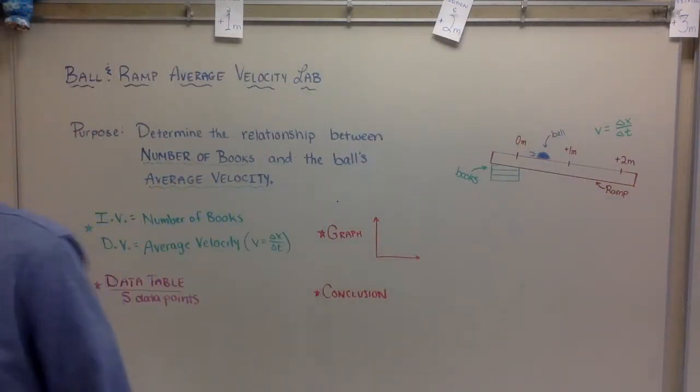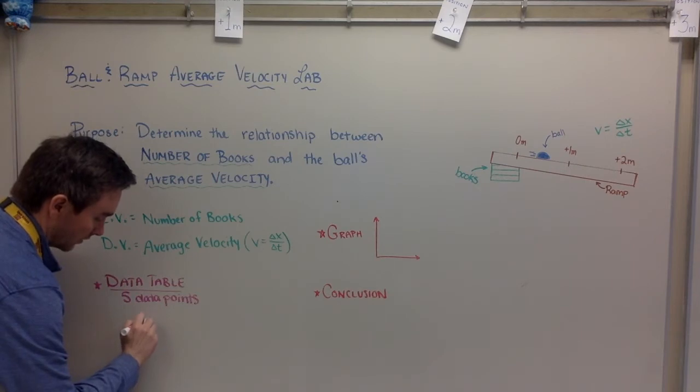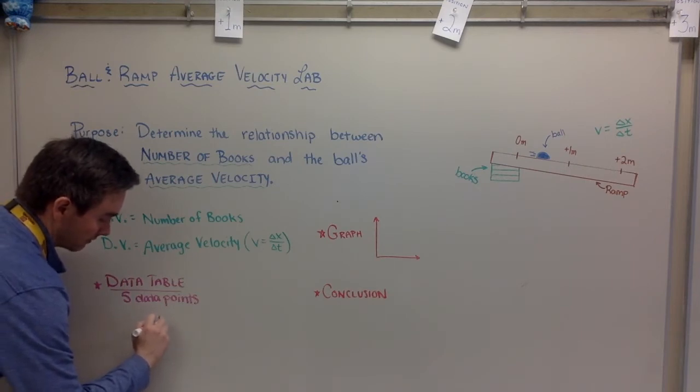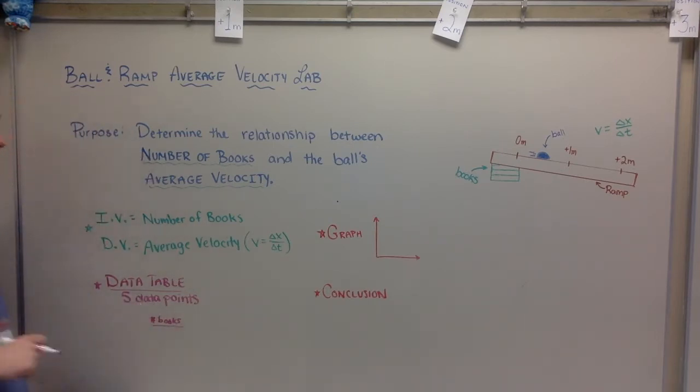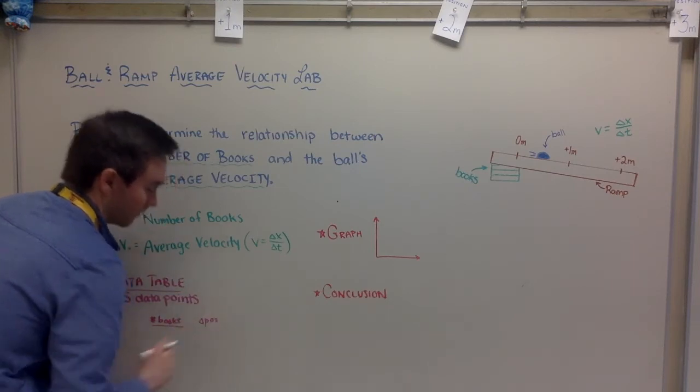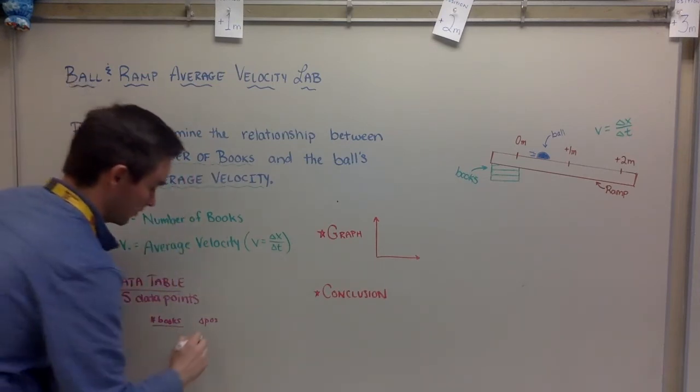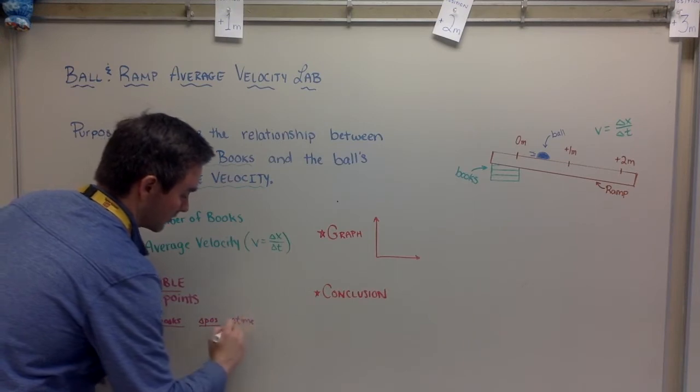Now for your data table, you're going to have to have five different data points. In your data table you're going to have the number of books, being your independent—that's the one you're going to choose. You're going to find out the change in position as it rolls down, say two meters. What's the change in time? How long did it take to go that two meters?